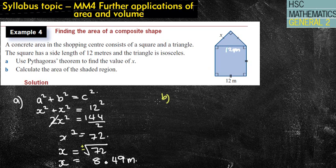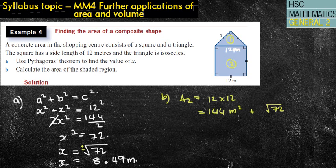Okay, part B. Calculate the area of the shaded region. Well, I'm going to do the second area. We call it area 1. This is area 2. That's a square, which is 12 by 12, which equals 144 meters squared. And I'm going to add that on to the square root of 72. It probably doesn't matter if you use 8.49 in this particular question. So, total area is equal to, I'm just going to, on my calculator, plus 144.